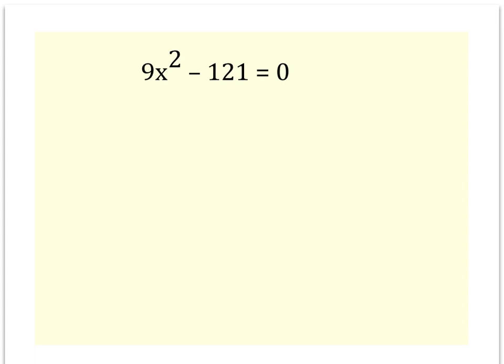This problem is really asking 9x squared plus 0x minus 121 equals 0. And the nice shortcut, what will always work is when you have the subtraction sign and perfect squares, you can use the square roots.